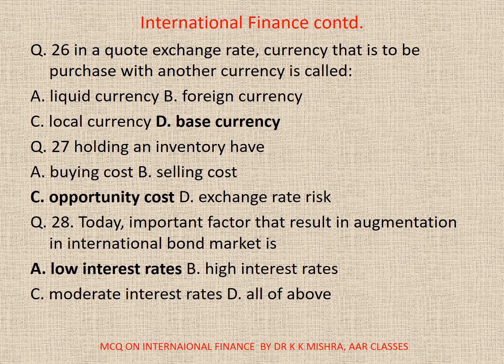Question 27. Holding and inventory have: A. Buying cost. B. Selling cost. C. Opportunity cost. D. Exchange rate risk. Correct option is C. Opportunity cost.